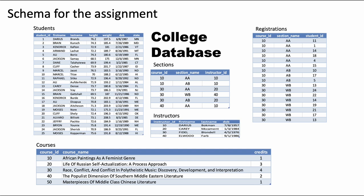For this assignment, I have already given you this database, which is the college database. As you can see, it has a table giving details of students, another table giving details of instructors, and then a table containing information about courses, a table containing information about the sections of the various courses that are being offered, and finally a table that tells you which students are registered in which sections.